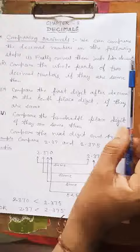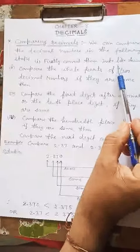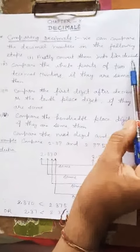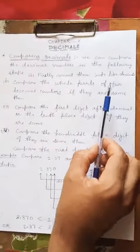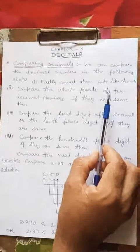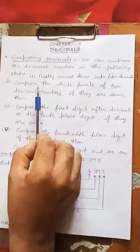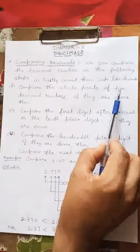Like decimals means the number of digits after the decimal will be the same. We can do this by putting a zero at the end of the decimal number. Second step: compare the whole parts of the two decimal numbers.